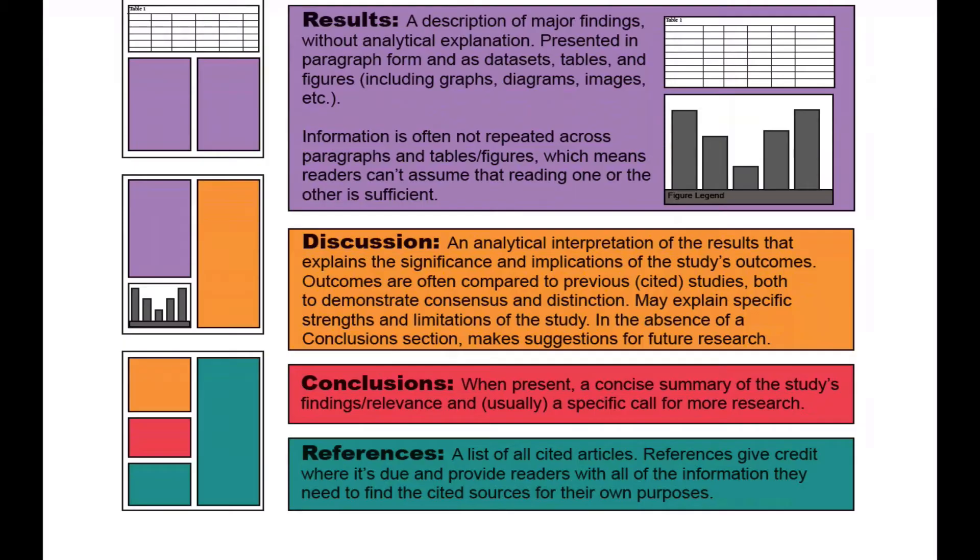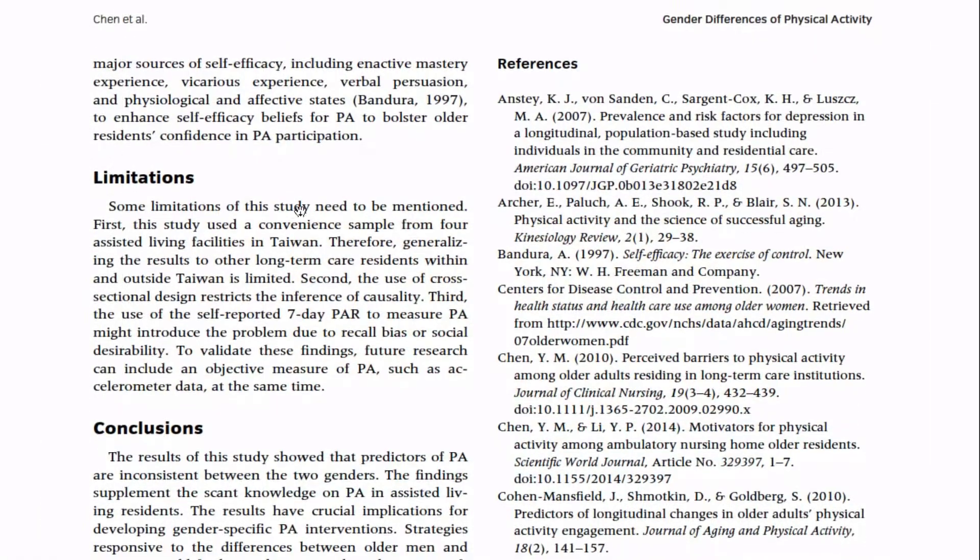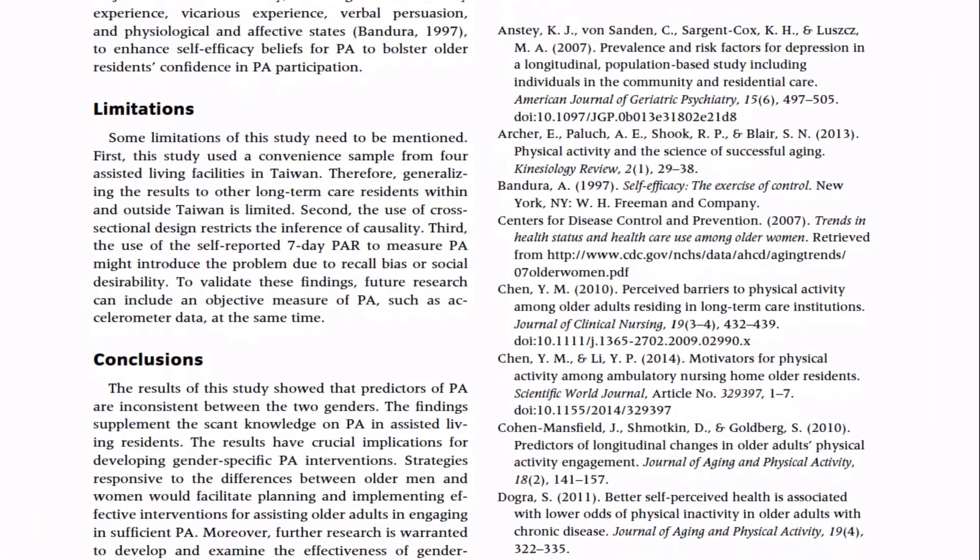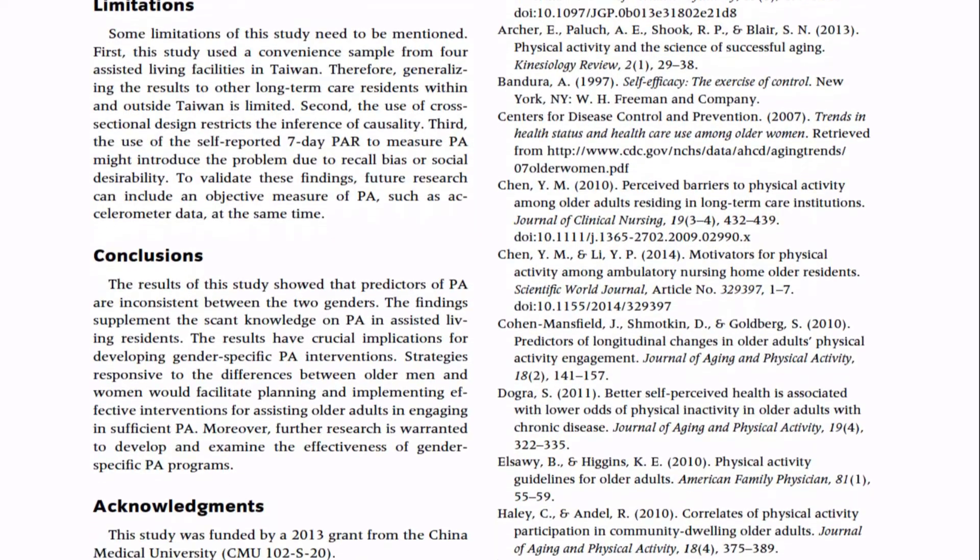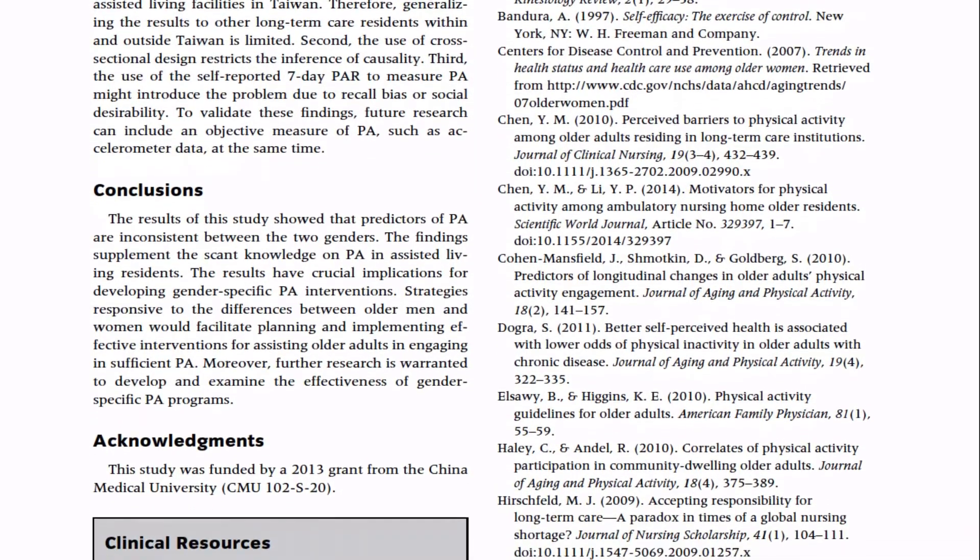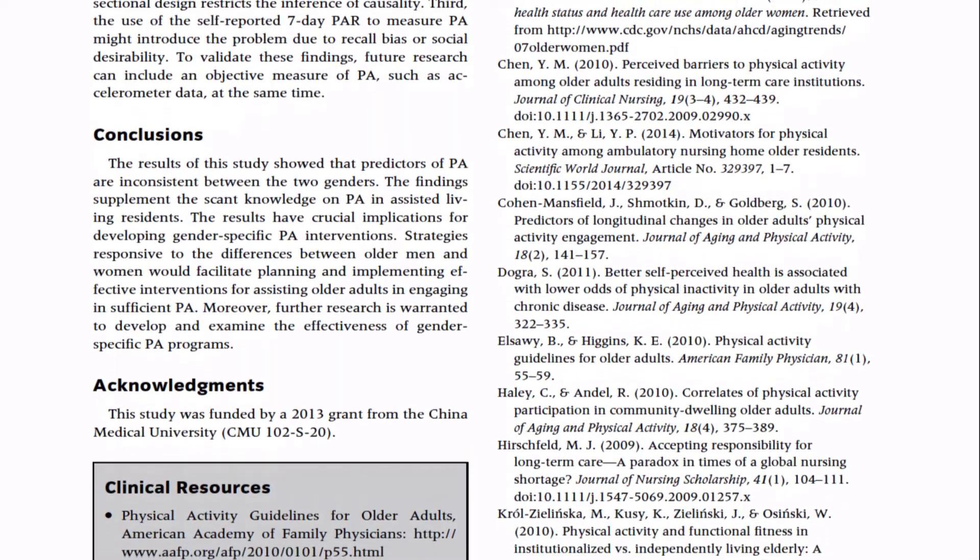Sometimes, studies don't produce groundbreaking results. They simply confirm what others have already found, which is still important to the scientific process. In this case, the authors will reference previous studies in the interest of demonstrating consensus. In the absence of a separate section for this purpose, the discussion will often point out the specific strengths and any weaknesses or limitations of the study design and outcomes.